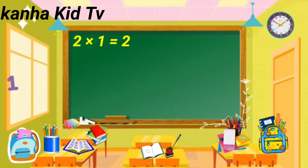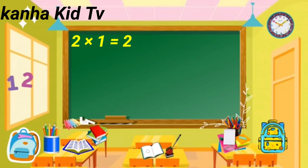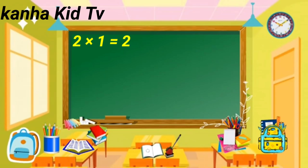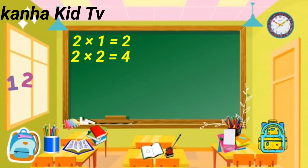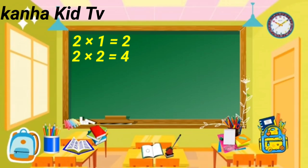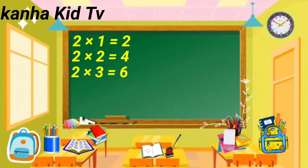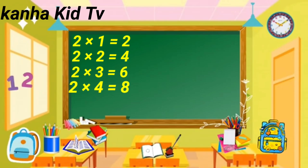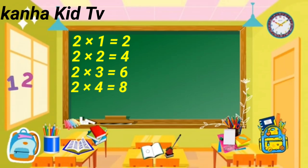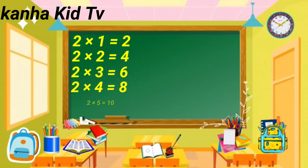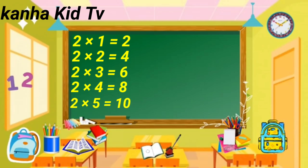Two ones are two. Two twos are four. Two threes are six. Two fours are eight. Two fives are ten.